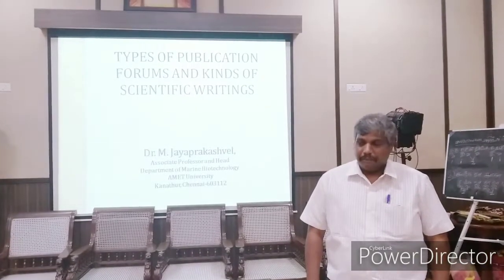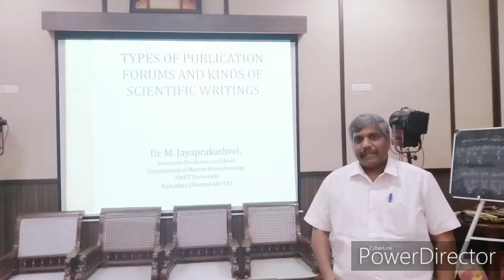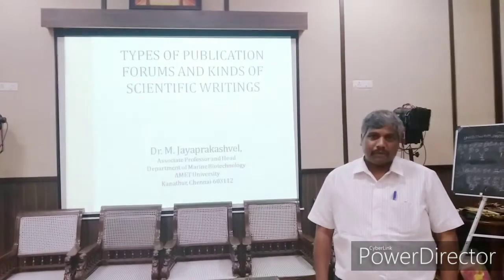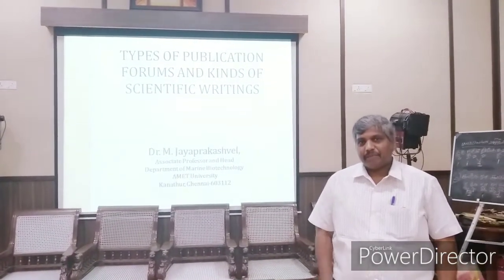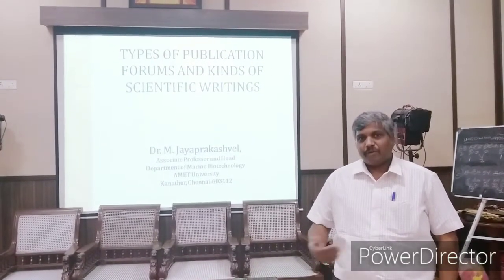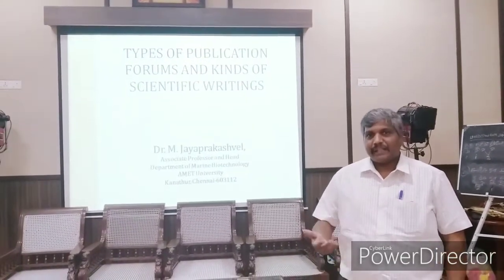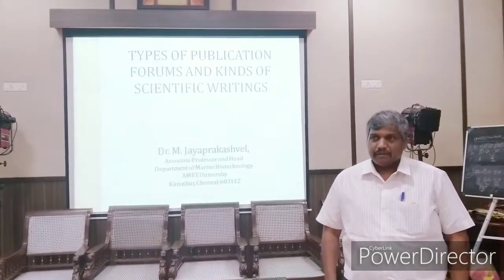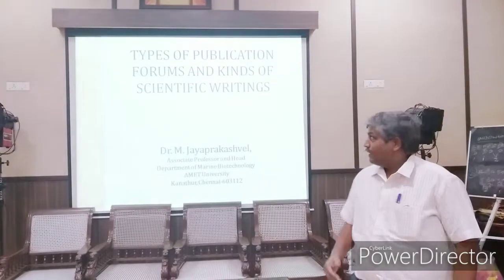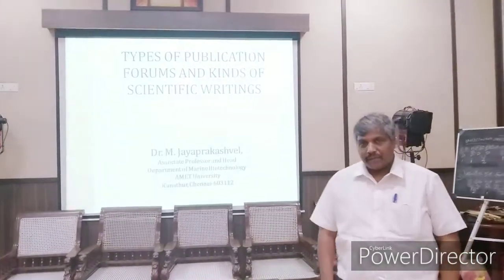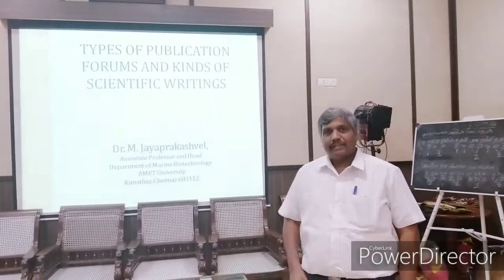Whatever the way research is being done, there should be an outcome for the research. Publications are one of the most important outcomes of research. There are many different kinds of publications. Different forums are there to publish your research, and different metrics are there to qualify your research. In this short presentation, I would like to give you a glimpse of the different types of publication forums available and the different kinds of scientific writings we can have.